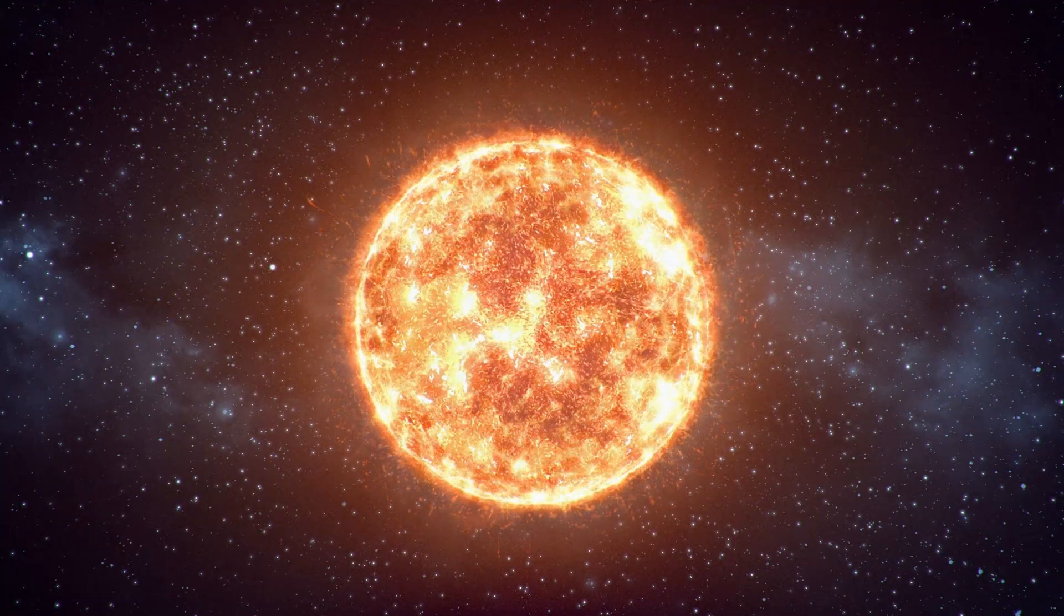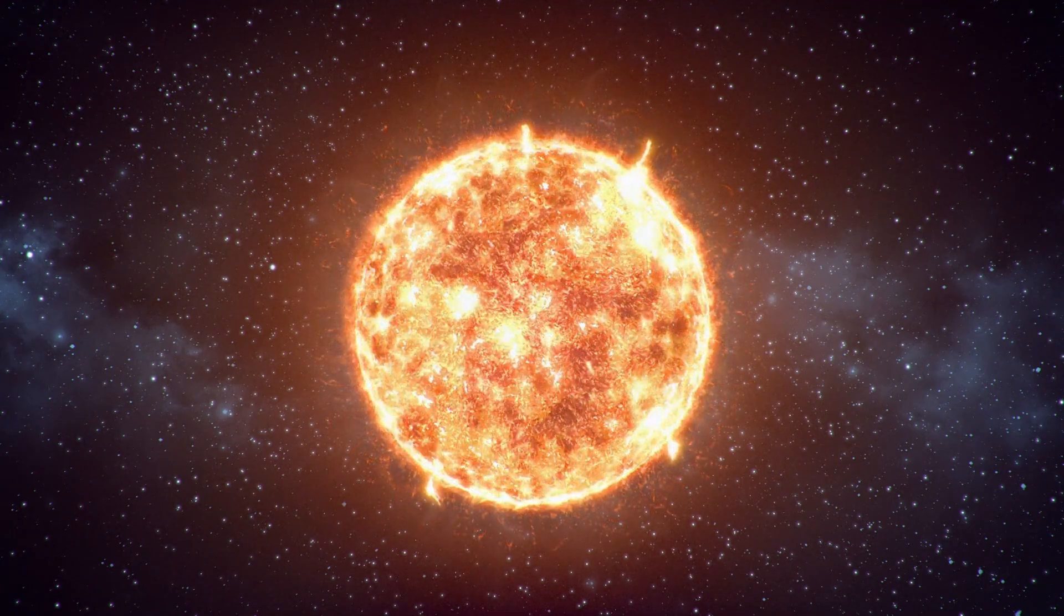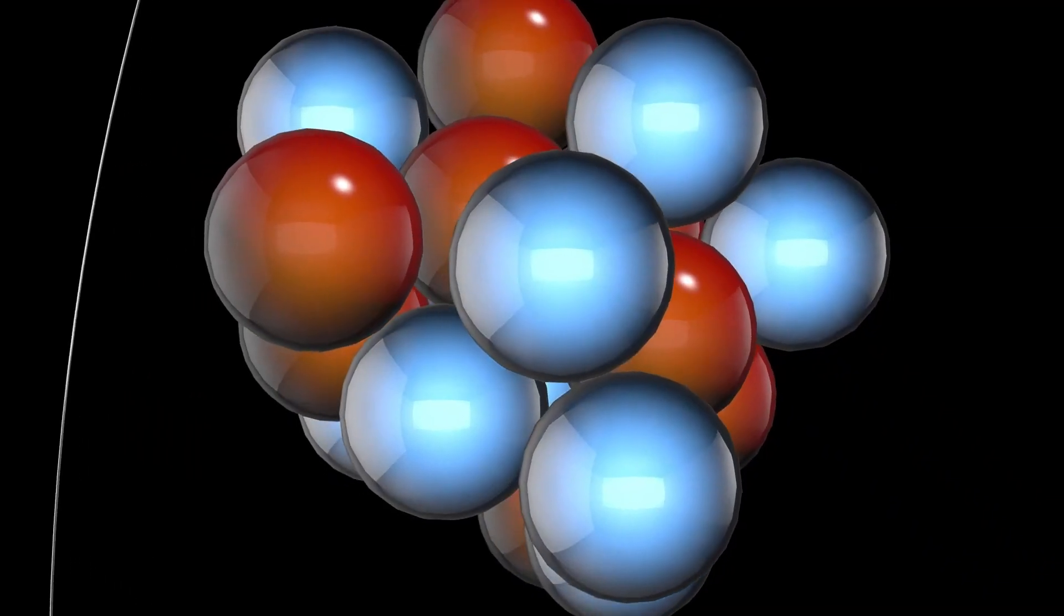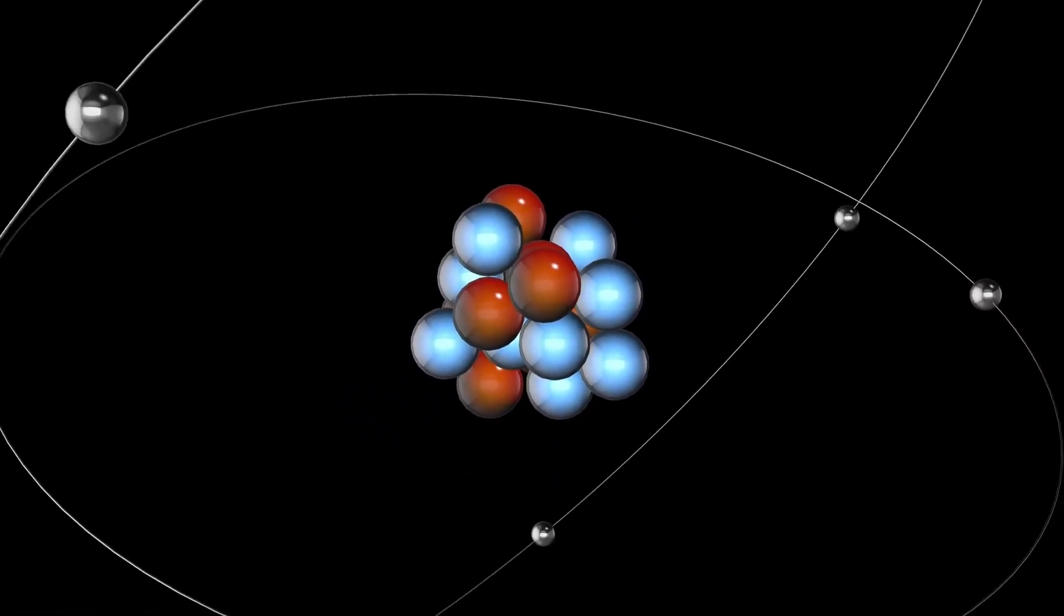These fluctuations are influenced by its surface temperature which, at approximately 3,500 Kelvin, is much cooler than the Sun's 5,500 Kelvin. Despite its enormous size, this lower temperature means Betelgeuse emits less energy per unit area, making it appear dimmer than expected.